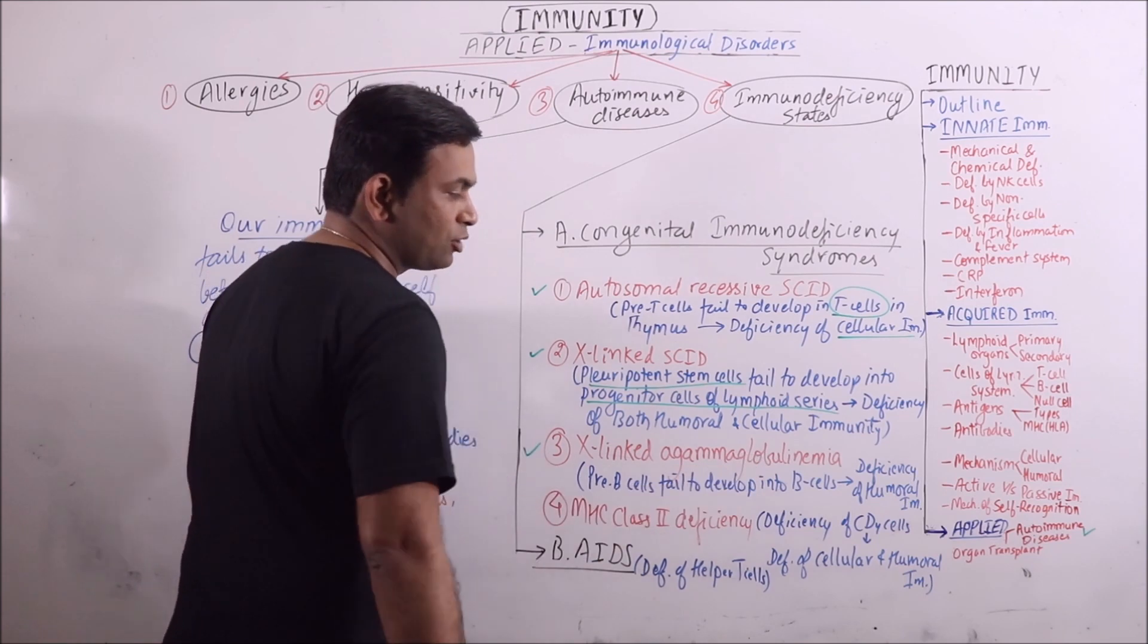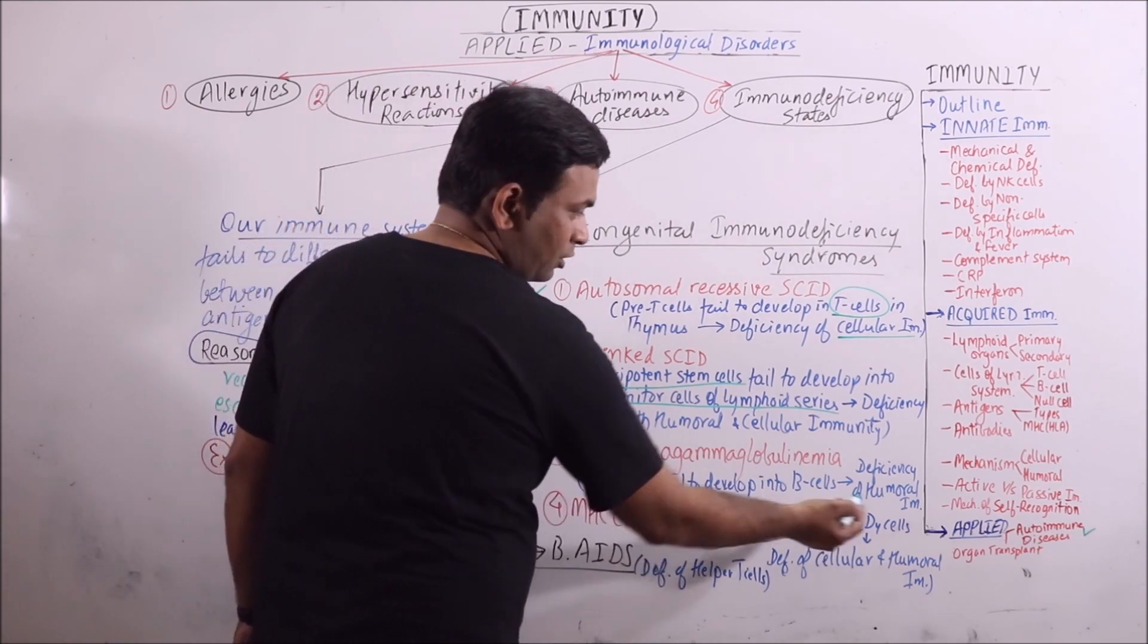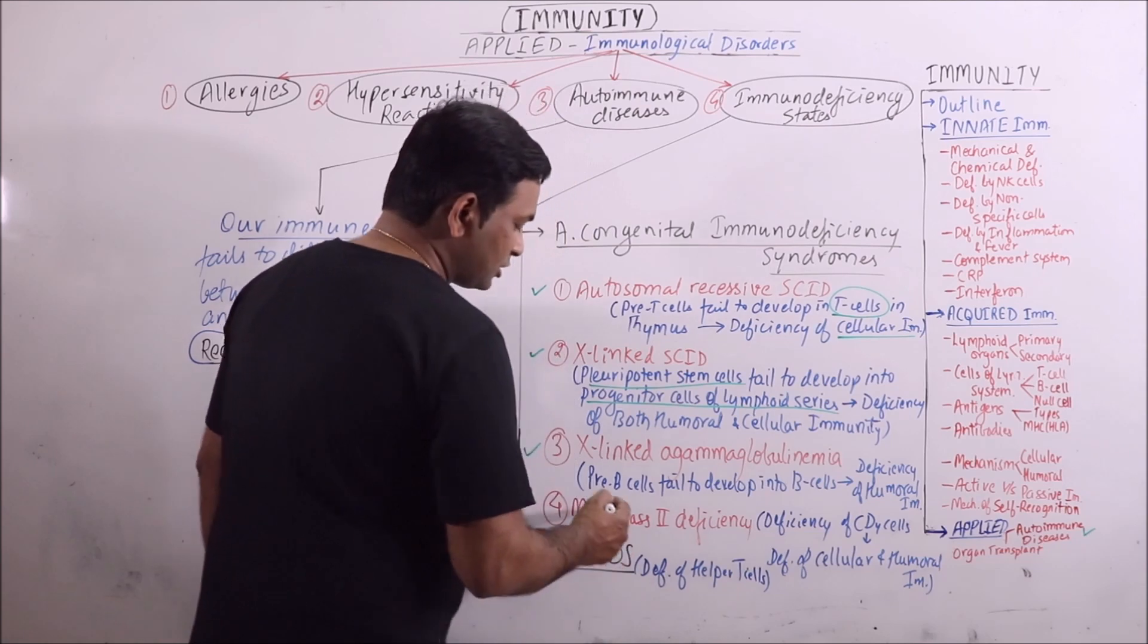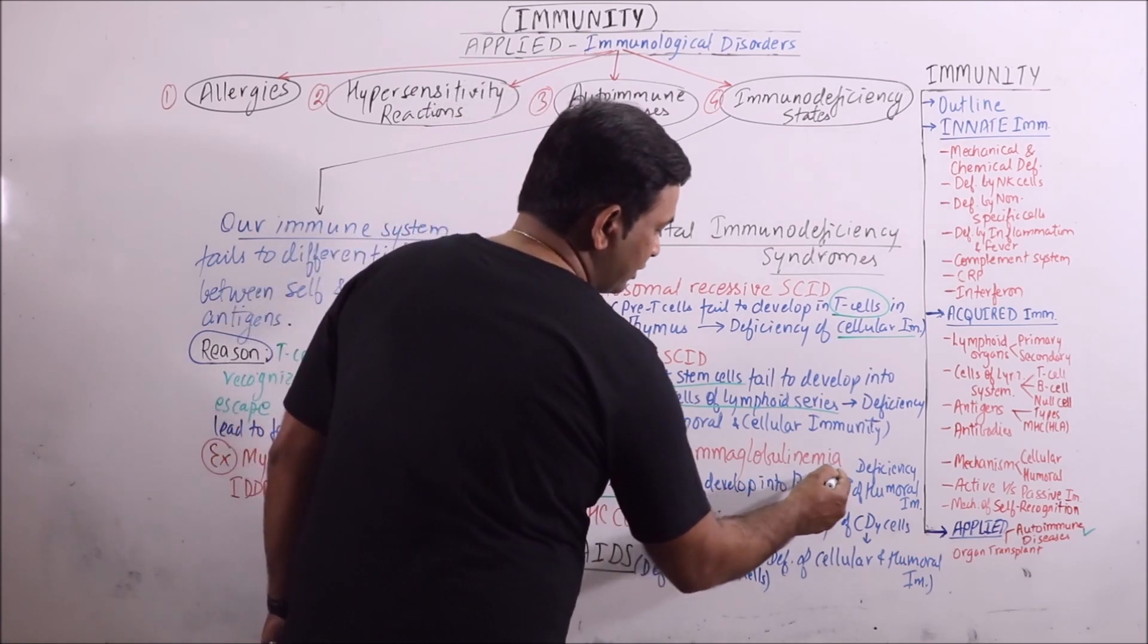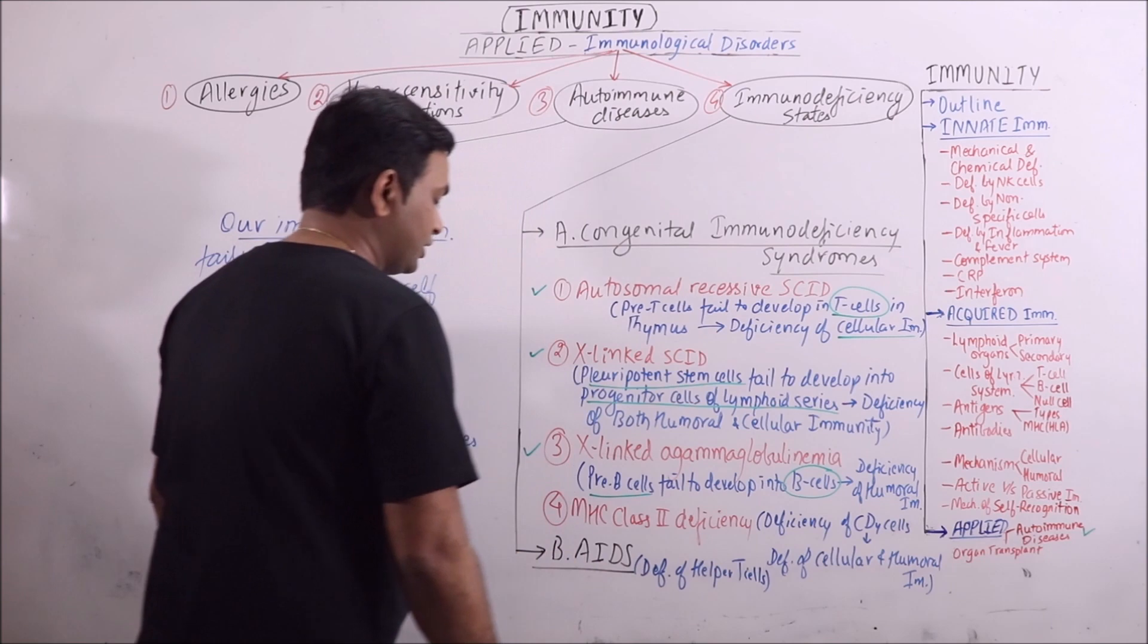Then X-linked agammaglobulinemia, deficiency occurs of humoral immunity because pre B cells fail to develop into B cells. So humoral immunity is deficient.